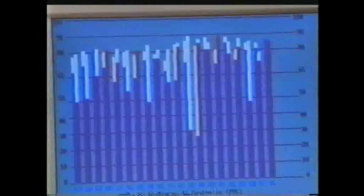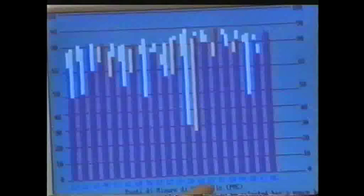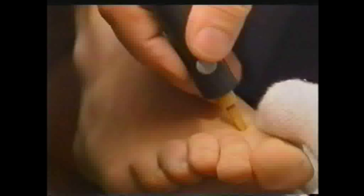We can see that the meridian with the biggest energy drop — in other words with the longest white strip — is the meridian of the articulations, then the meridian of the liver, the endocrine system, and after that the allergies and the gallbladder. We've got our work cut out here.